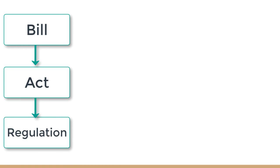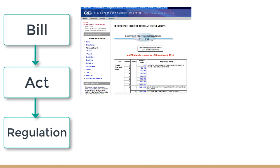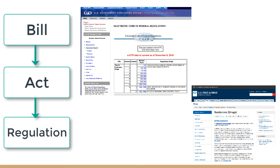So to summarize: an idea gets introduced to Congress as a bill, and if Congress approves the bill, it goes to the President to either sign or veto. If the bill becomes law, it becomes an act, in which the regulatory agency responsible for overseeing it will create regulations to implement the act. And lastly, the regulatory agency such as the FDA can create guidance documents to provide their current thinking regarding certain regulations.